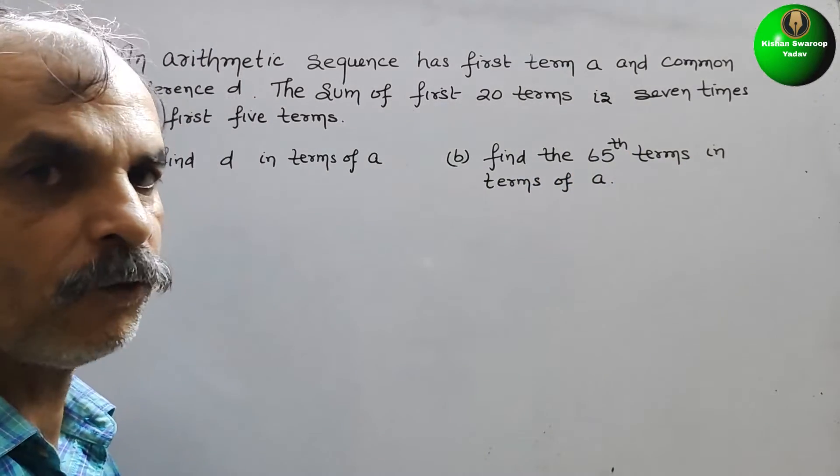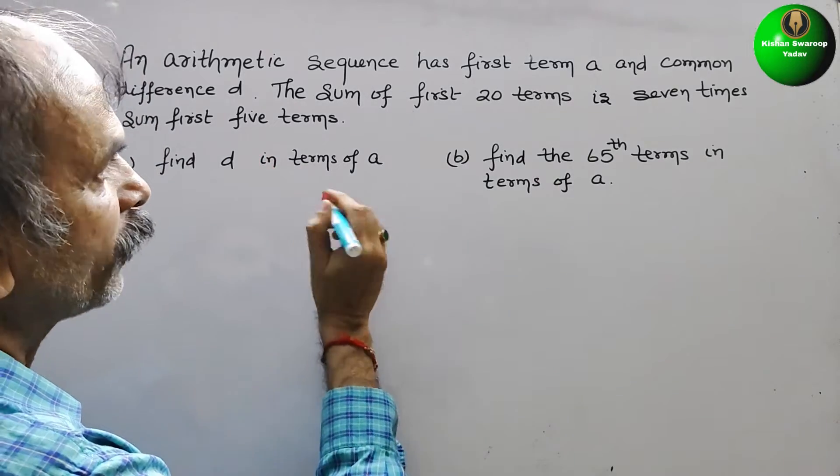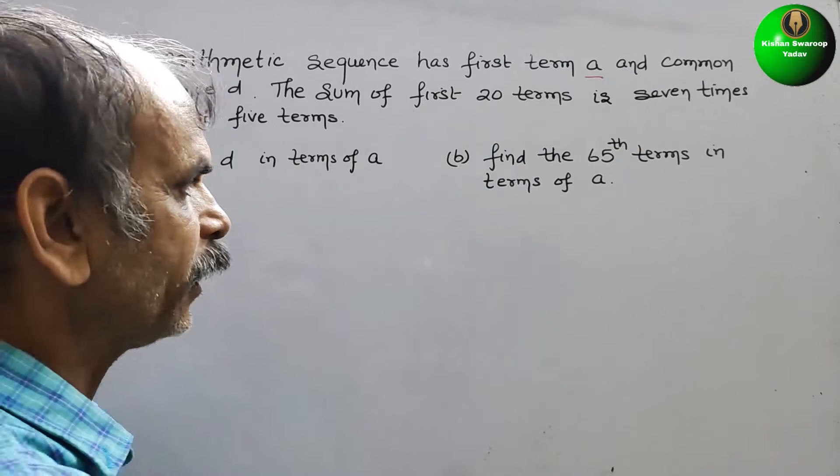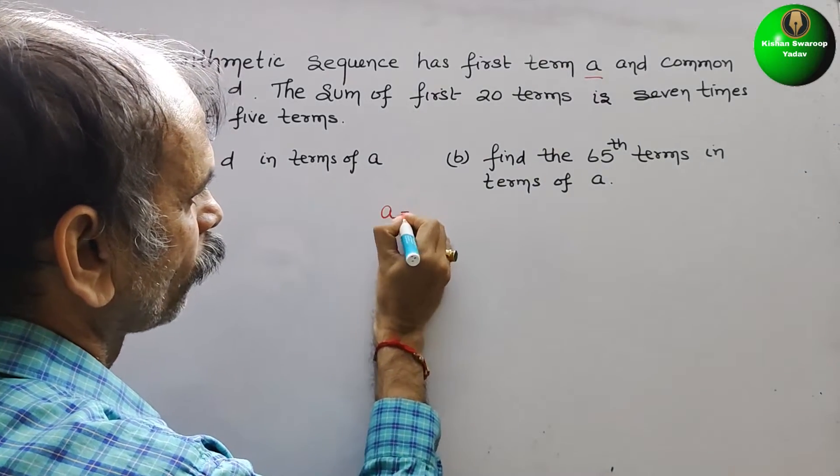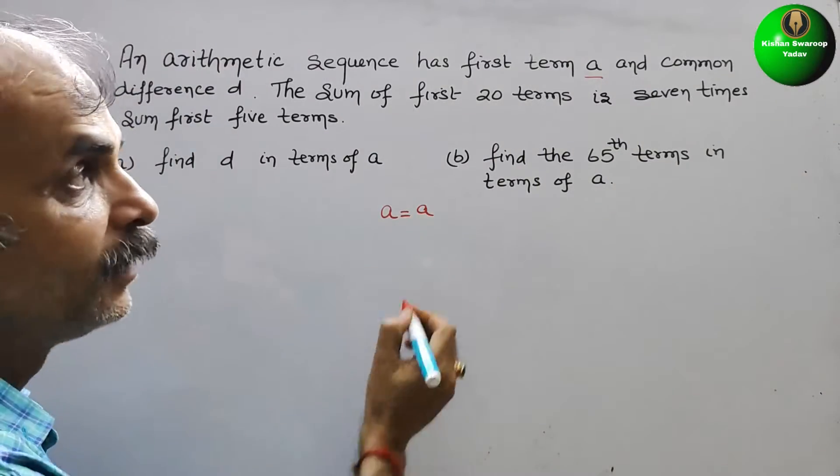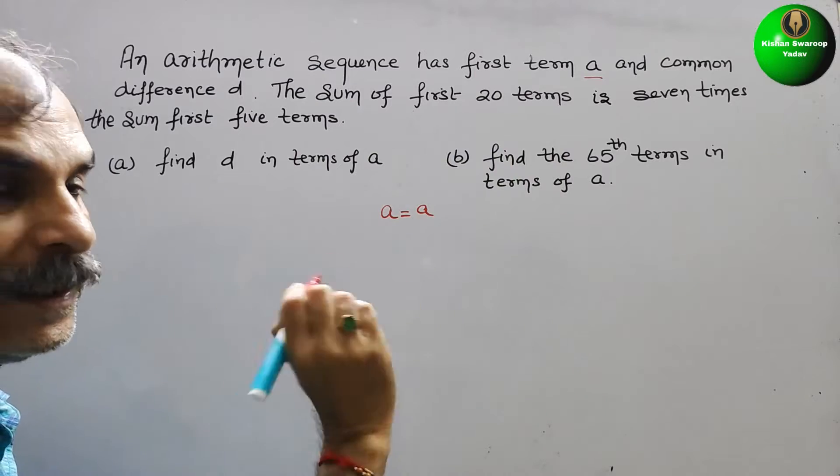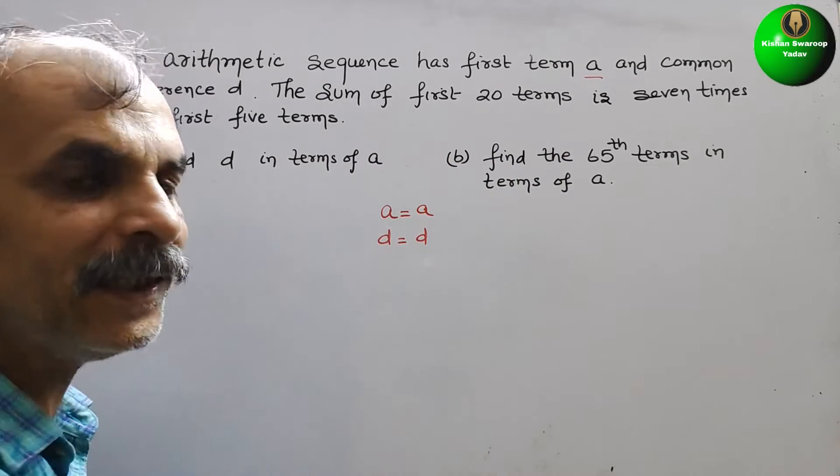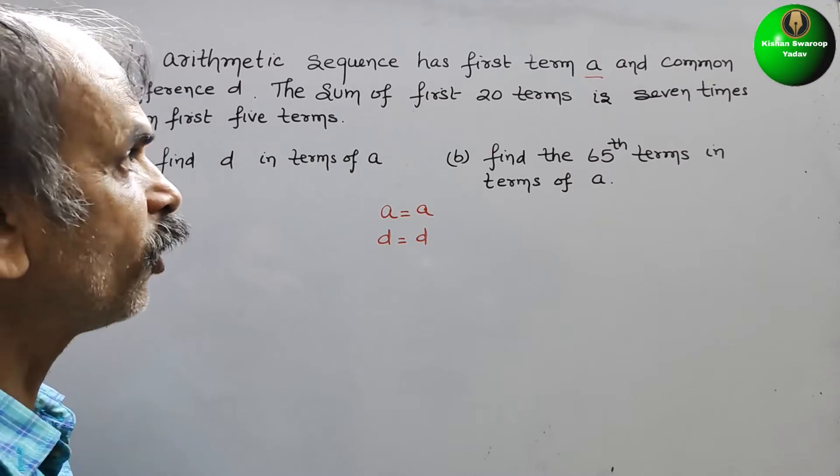Now, see what they have given. Here they have given the first term is A, that means A equals A. Next, common difference is D, so we can say D equals D.